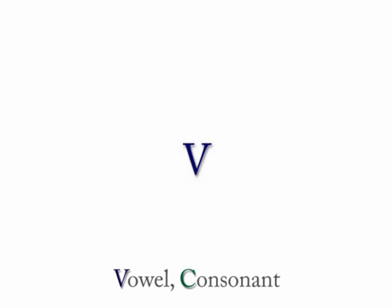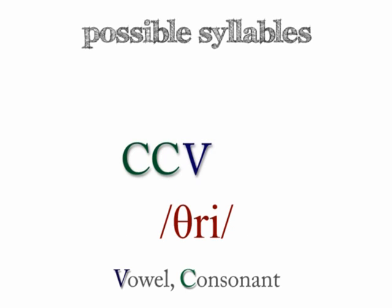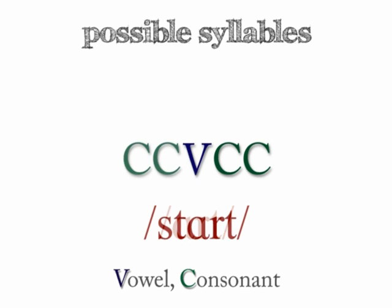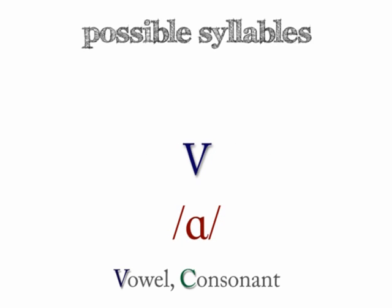So we can have syllables with consonants before the nucleus and none after. We can have syllables with consonants after the nucleus and none before. We can have a syllable with consonants both before and after the nucleus. We can even have syllables with no onset and no coda — just a nucleus.